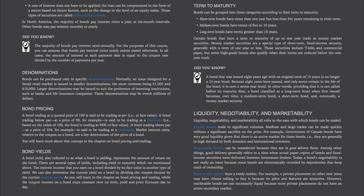Term to maturity: bonds can be grouped into three categories. Short-term bonds have more than one year but less than five years remaining. Medium-term bonds have terms of five to ten years. Long-term bonds have terms greater than ten years. Certain bonds with a term to maturity of up to one year trade as money market securities — a special type of short-term fixed income security generally with a term of one year or less, including T-bills and commercial paper. A bond initially issued as a long-term bond becomes, over time, a medium-term bond, then a short-term bond, and eventually a money market security.